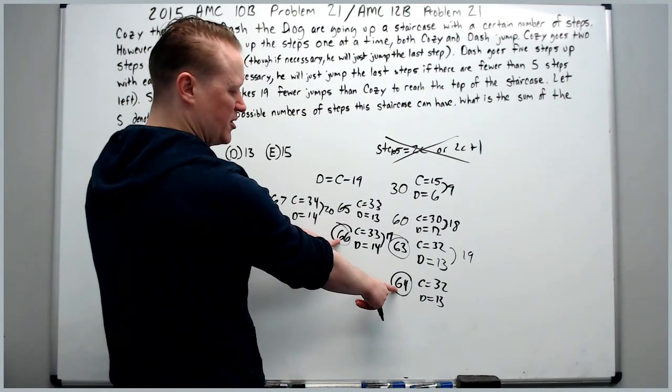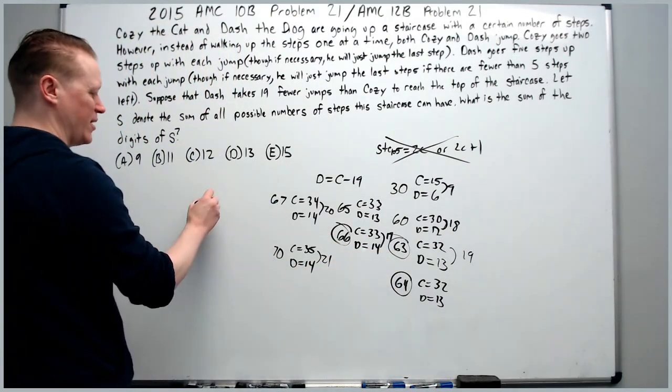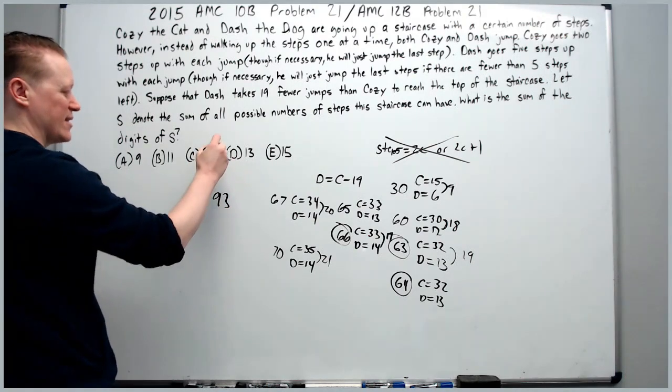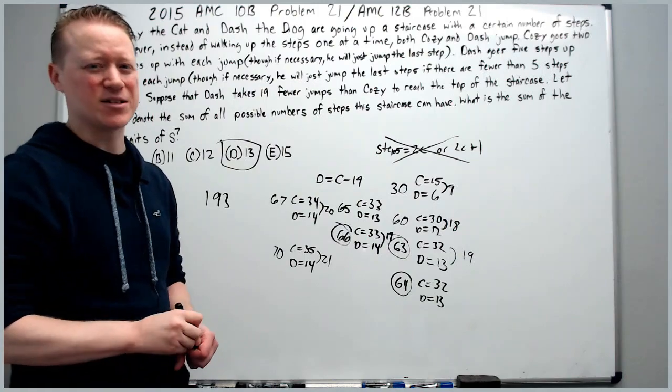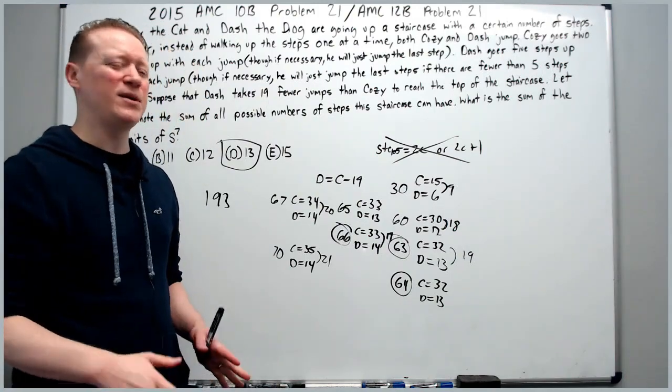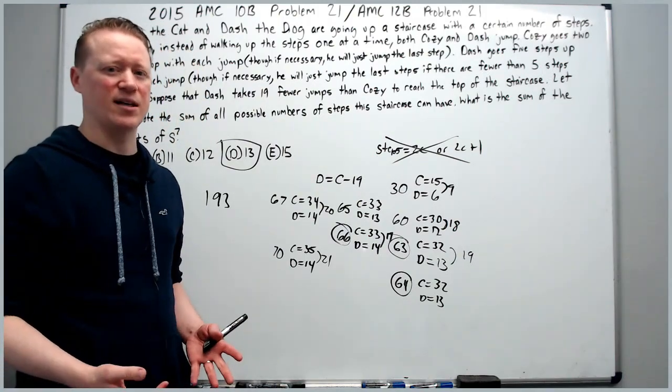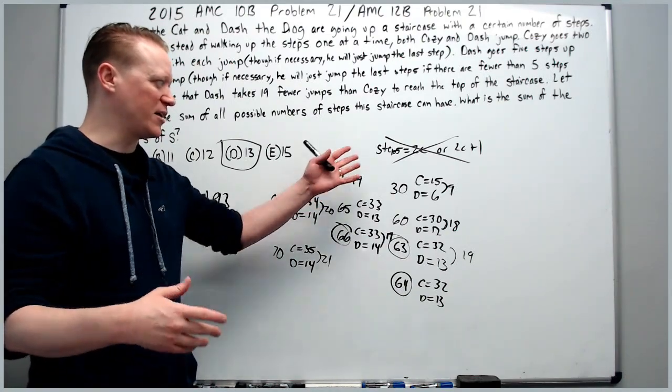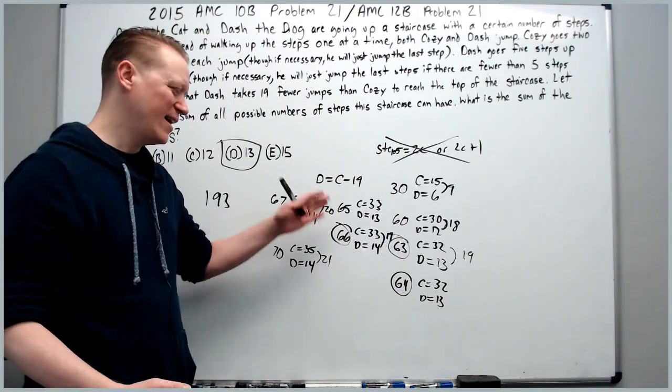Adding these you get 130 plus 63 is 193. 9, 3 and 1 is 13 and that will be our answer. Again, don't give up on a problem because you don't know the beautiful solution. Make sure you try to overcome your lack of ability to create those kinds of equations and just figure it out.